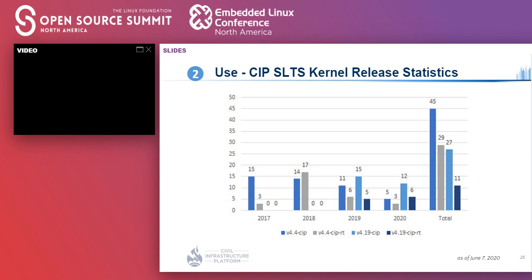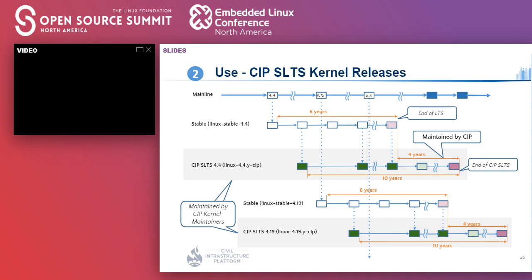So far, we have steadily released kernels thanks to our maintainer following the release frequencies I just explained. This chart shows how upstream releases are used in our SLTS releases. Both LTS 4.4 and 4.19 are maintained for six years by LTS projects. Because CIP aims to maintain for 10 years, the remaining four years will be maintained by CIP. We made major releases in 2017 and 2019, meaning major release frequency is once per two years. Because 2021 is approaching, we started to discuss new SLTS kernels.